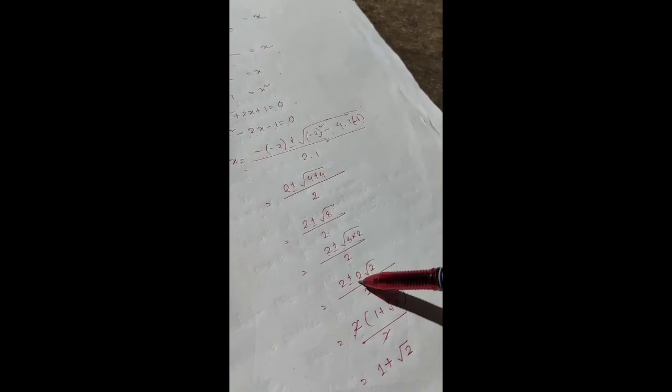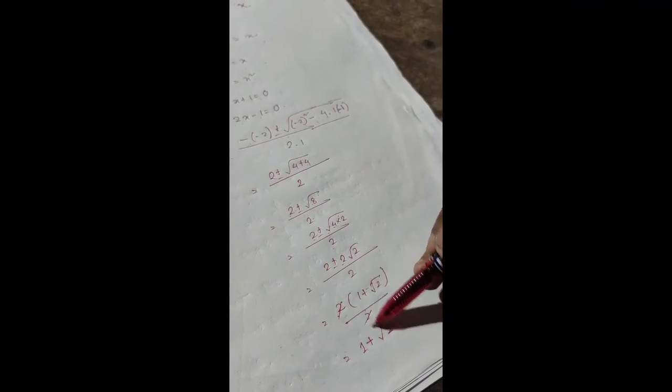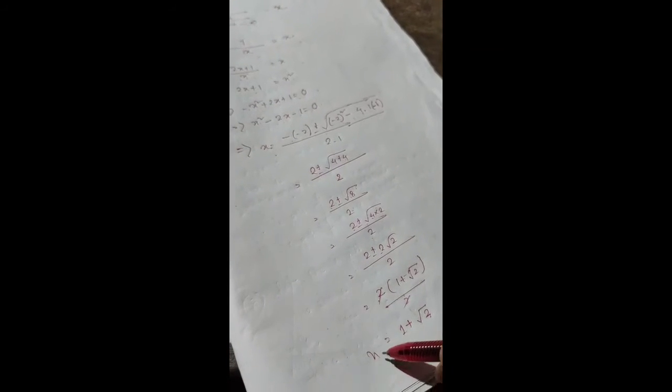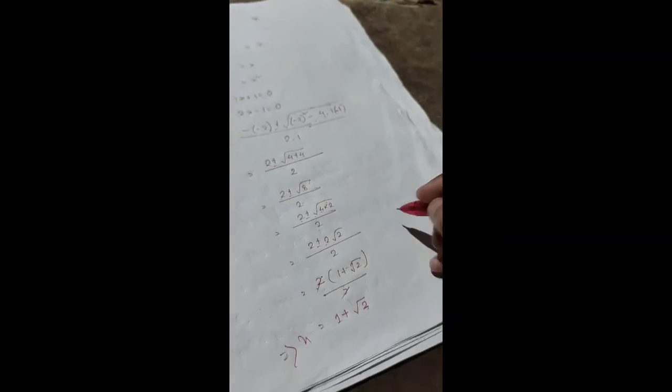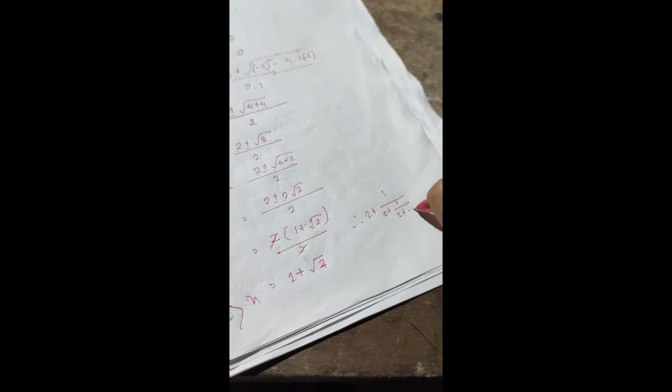√8 equals 2√2. So (2 ± 2√2)/2. Taking 2 common: 2(1 ± √2)/2. Canceling: x = 1 ± √2. Since x must be positive, x = 1 + √2. Therefore 2 + 1/(2 + 1/(2 + ...)) = 1 + √2.